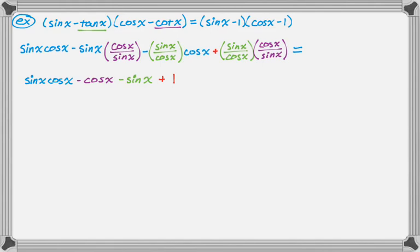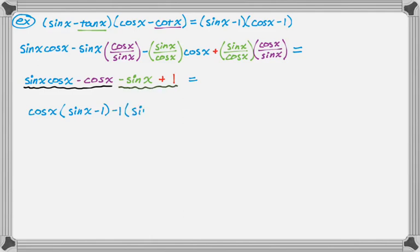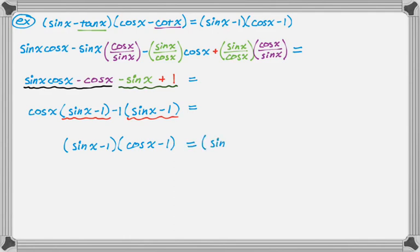Here's something that looks kind of weird, but you can actually factor by grouping. I'm going to group together the first two terms and take a cosine out, leaving (sine − 1). Then from the second two terms I take out a negative one, leaving (sine − 1). Out of both groups I can factor out (sine − 1), which leaves me with (cosine − 1). And if you look at what we were supposed to prove, it's exactly that. So we did it.